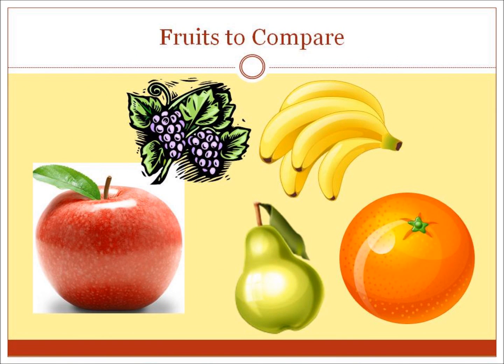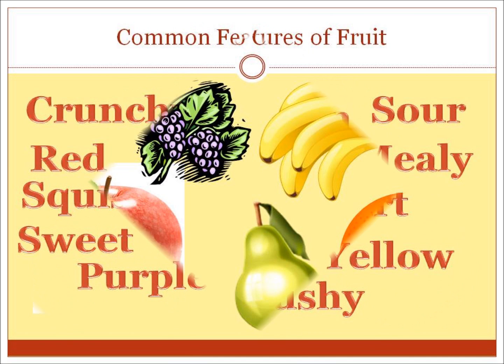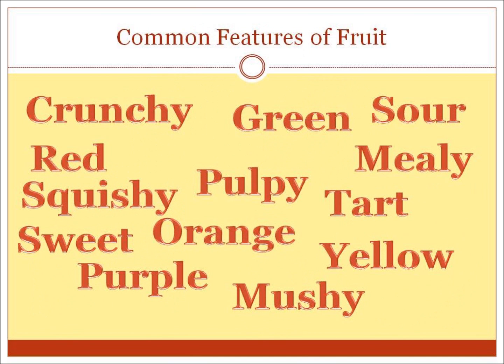The first step to creating a features comparison matrix is to determine exactly what you want to compare. Let's start by listing several fruits: apple, orange, banana, pear, grape. We could go on all day, but let's narrow our focus to just five so we don't overwhelm ourselves.